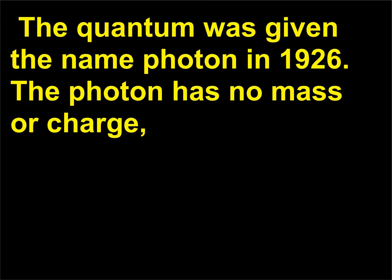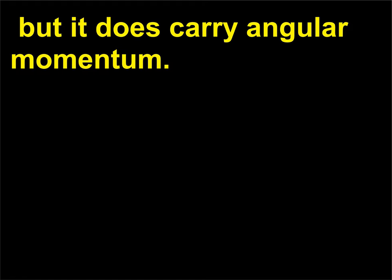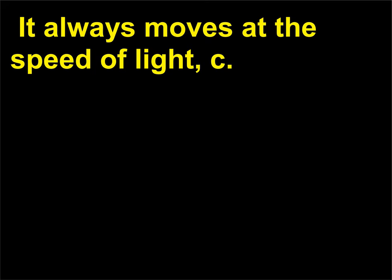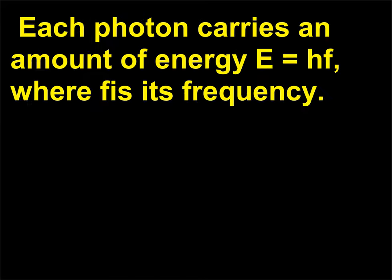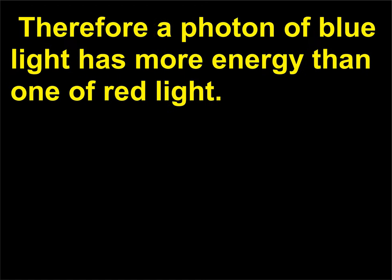The photon has no mass or charge, but it does carry angular momentum. It always moves at the speed of light c. Each photon carries an amount of energy E = hf, where f is its frequency. Therefore a photon of blue light has more energy than one of red light.